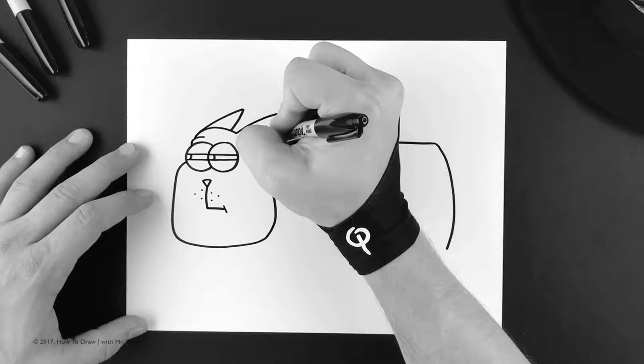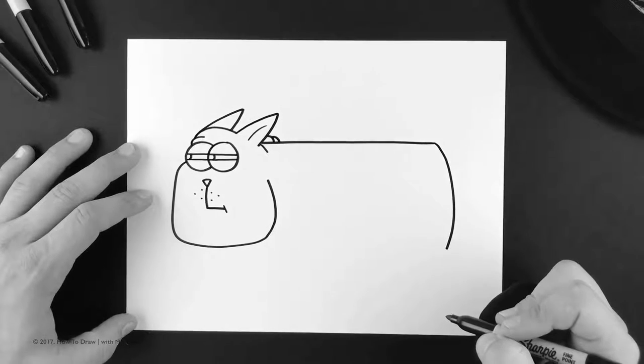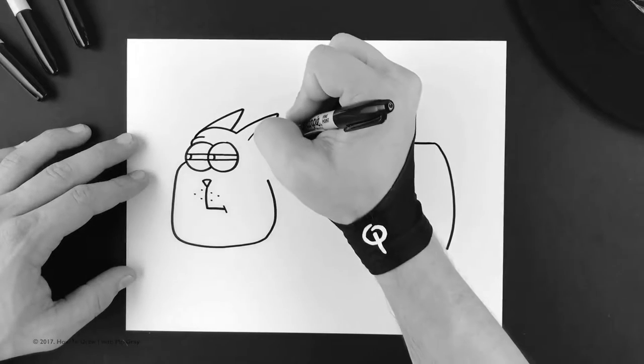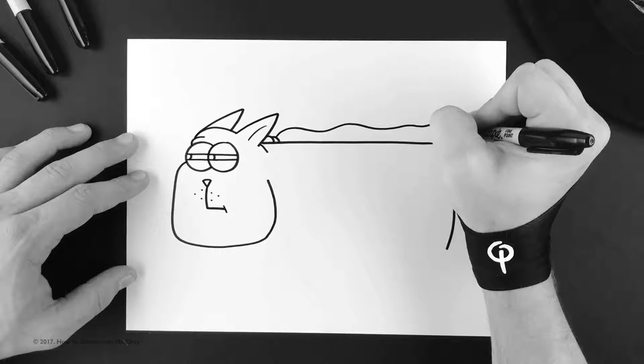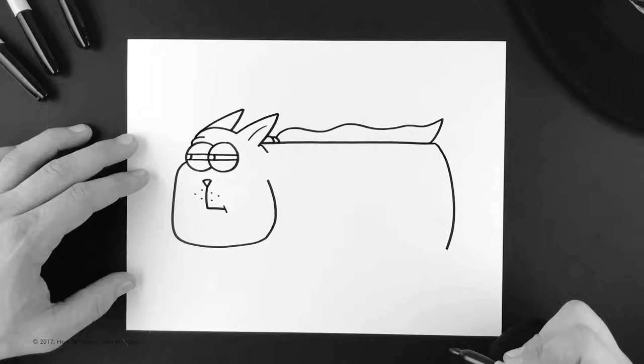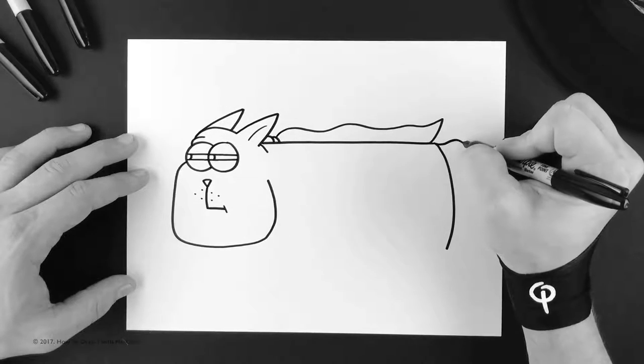But before we go any further, let's go ahead and build in his cape. Let's put in two little round half seeds behind his ear. That'll be where he tied his cape. And just go ahead and do a wavy cape just like that.